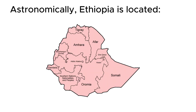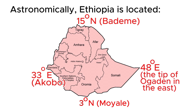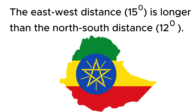Astronomically, Ethiopia is located between 3 degrees north — Moyale — and 15 degrees north — Badme, the northernmost tip of the country — in latitudes, and 33 degrees east — Akobo — to 48 degrees east, the tip of Ogaden in the east. The east-west distance of 15 degrees is longer than the north-south distance of 12 degrees.